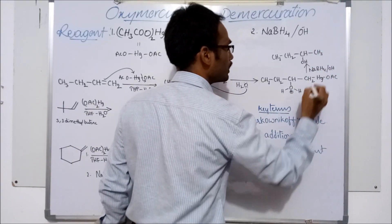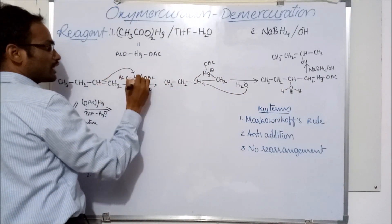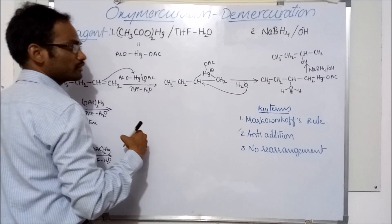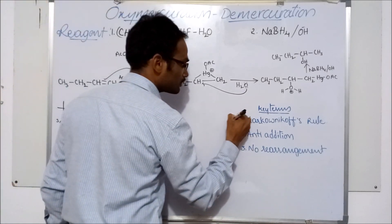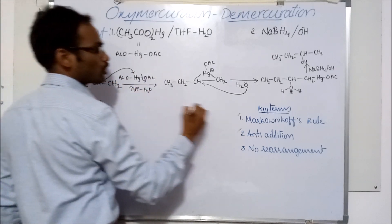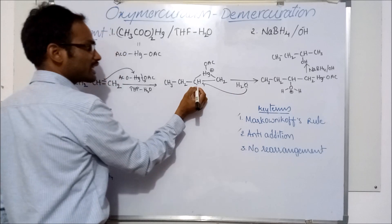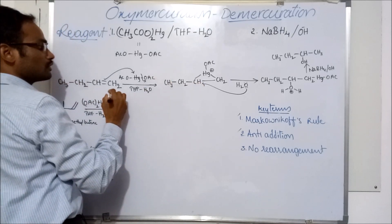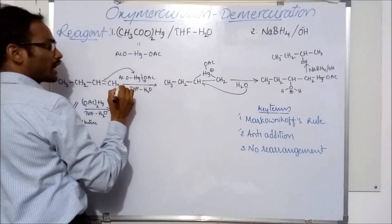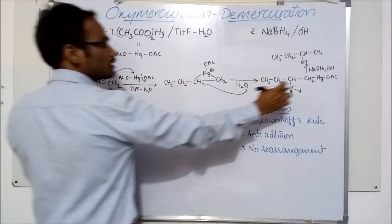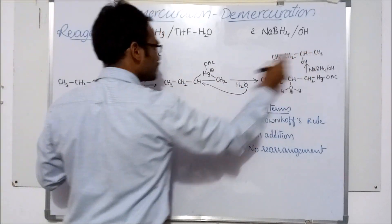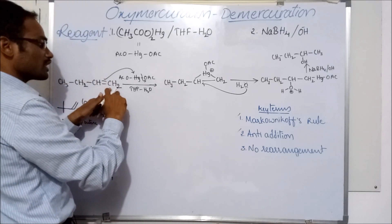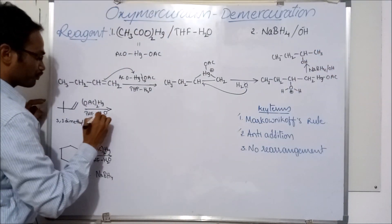One group is added from the top of the plane and the other from below — that means opposite sides. This is anti addition. Hydration of alkenes using mercuric acetate follows Markovnikov's rule: the negative part of the reagent attaches to the carbon with fewer hydrogens, and hydrogen adds to the carbon with more hydrogens. Here, CH₂ has more hydrogens, so hydrogen is added to CH₂, making it CH₃.